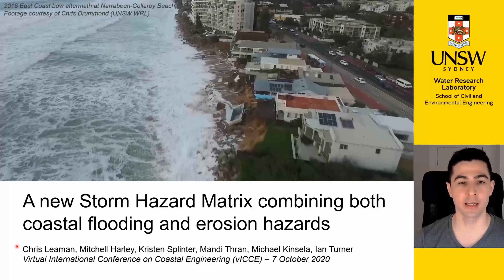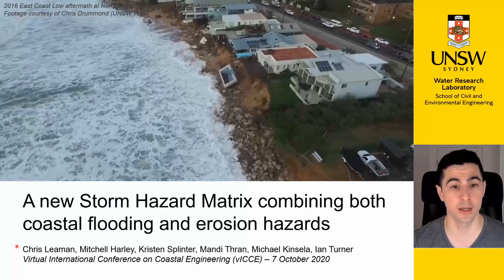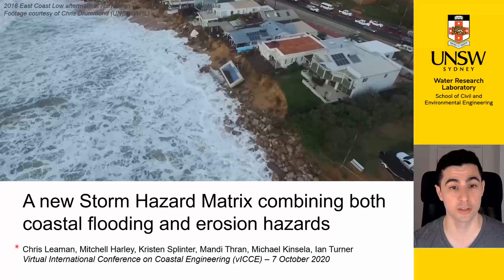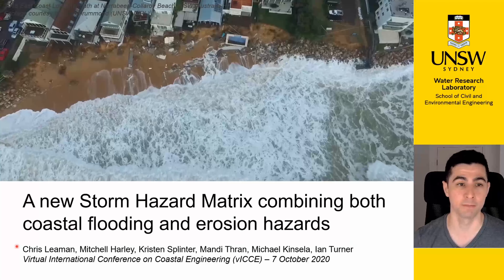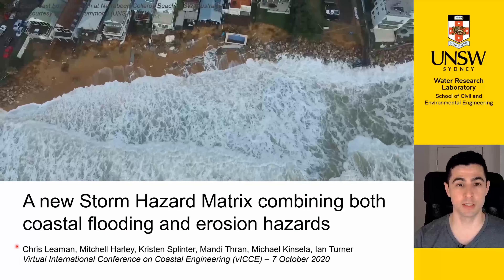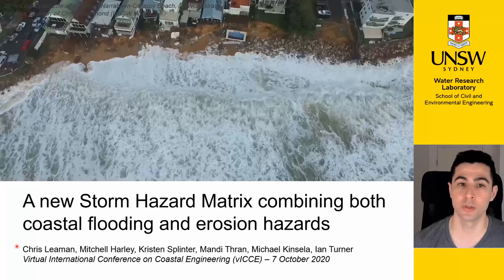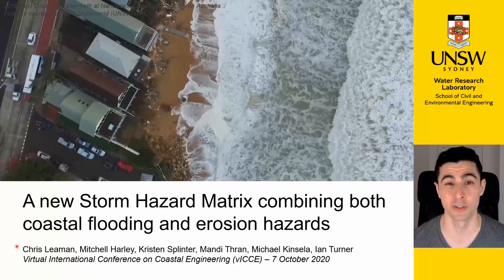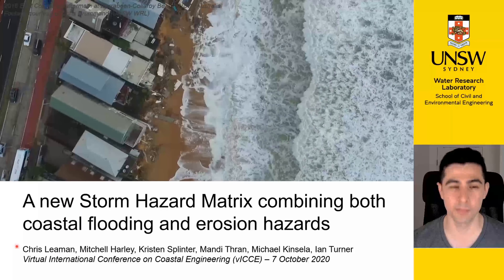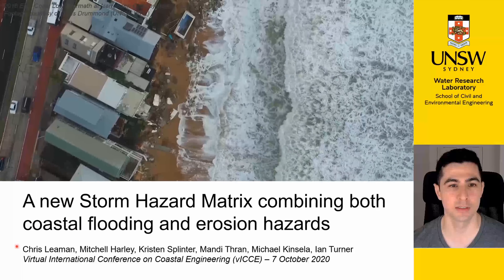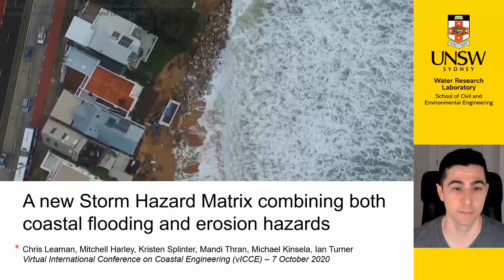What we're seeing here is some drone footage of the aftermath of a large storm that impacted the New South Wales coast in 2016. This particular footage was taken at Narrabeen-Collaroy Beach, which is a kind of chronic erosion hotspot, but we had impacts similar to this up and down the entire New South Wales coastline.